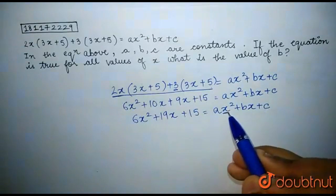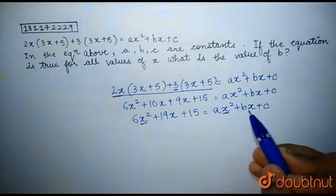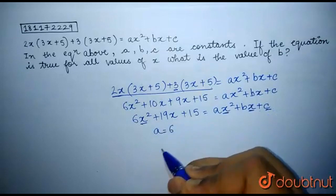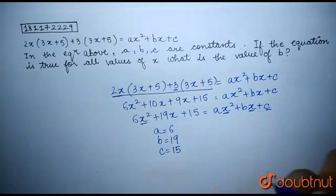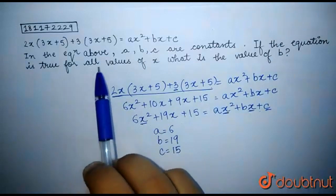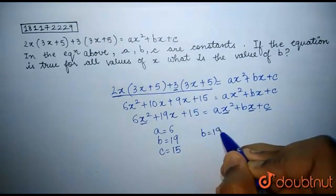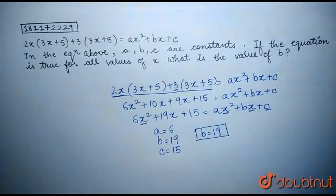Now, comparing the coefficients in the left and the right hand side of the equation, we get a is equal to 6, b is equal to 19, and c is equal to 15. The question asks us, what is the value of b? So, our answer is 19. Thank you.